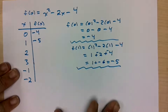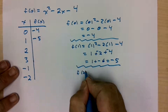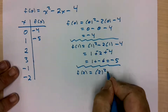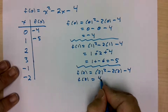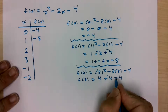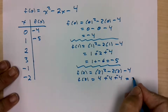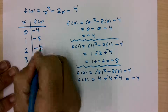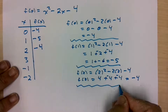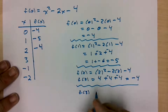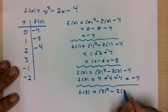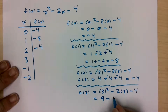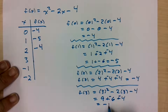For x equals 2: 2 squared minus 2 times 2 minus 4 equals 4 minus 4 minus 4, so f of 2 equals negative 4. For x equals 3: 3 squared minus 2 times 3 minus 4 equals 9 minus 6 minus 4, which is 9 plus negative 10, giving negative 1. So f of 3 equals negative 1.